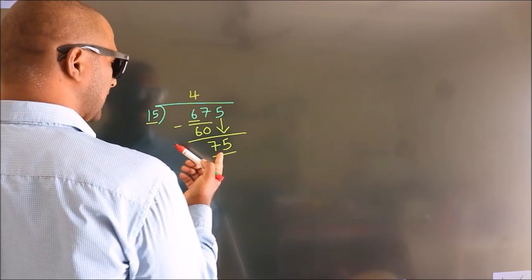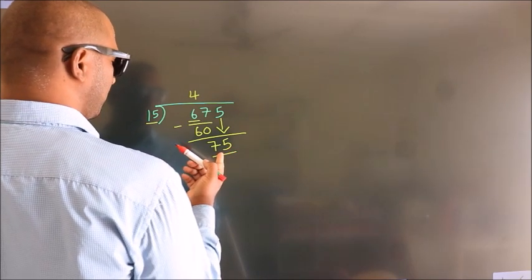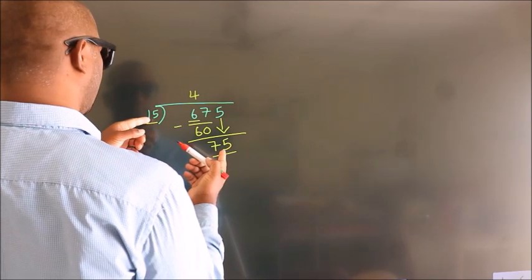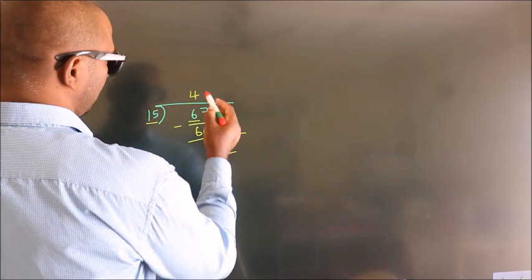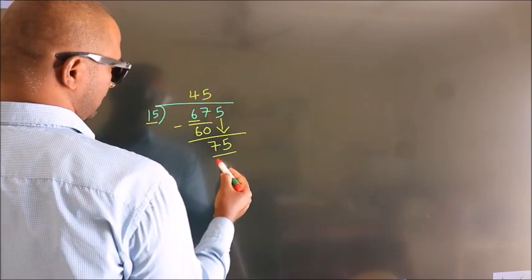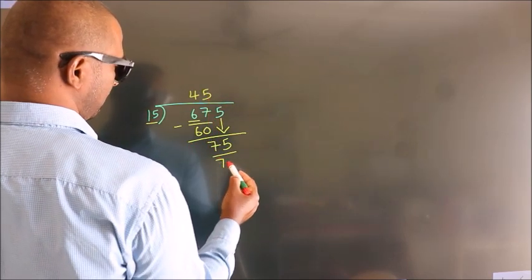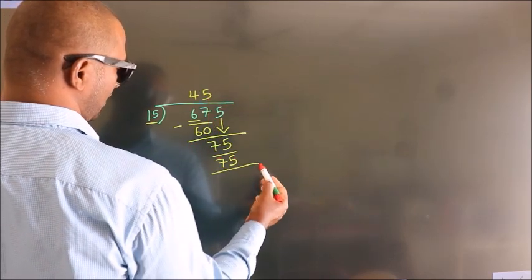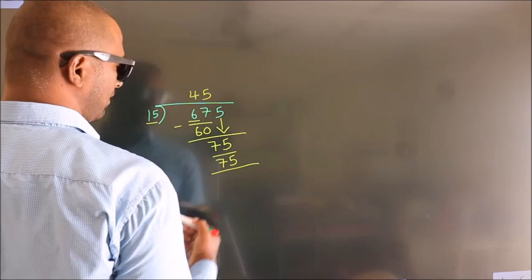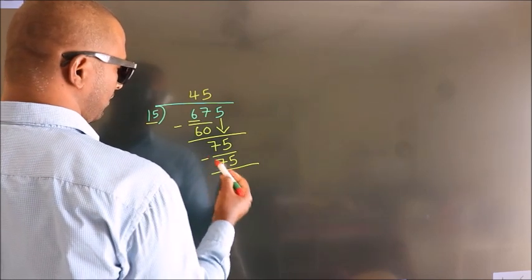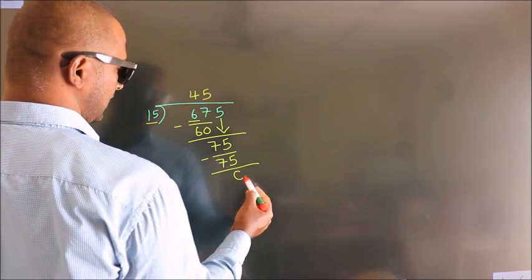When do we get 75 in the 15 times table? 15 fives are 75. Now we subtract and we get 0.